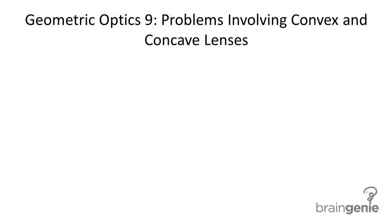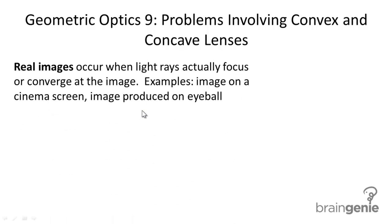Let's review two terms which we have gone over in a previous topic. The first is real images. Real images occur when light rays actually focus or converge at the image. An example is an image on a cinema screen or an image produced on an eyeball.